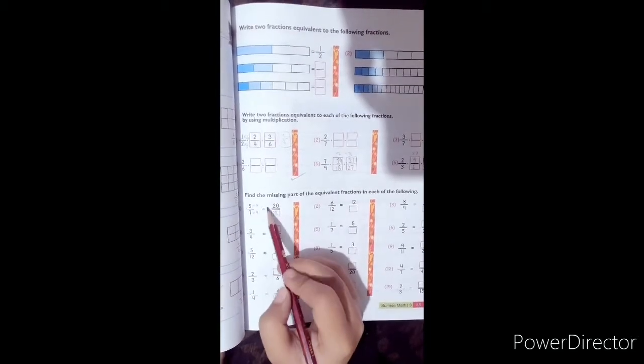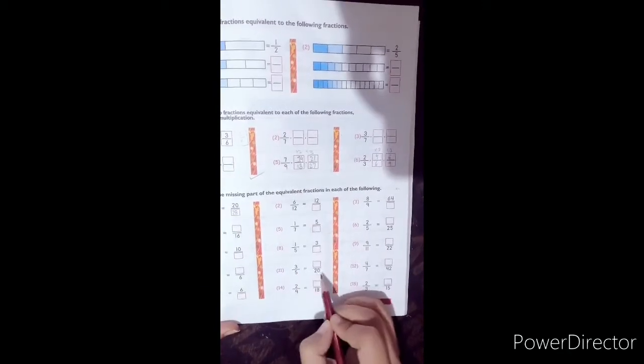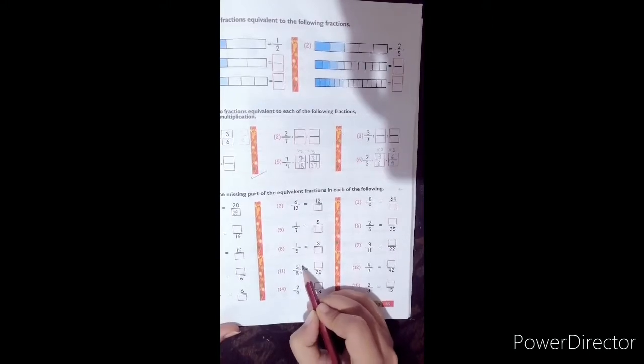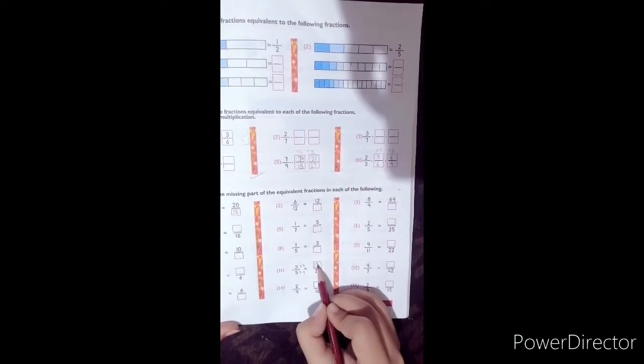We will find the missing number by observing. Here is 5 and 20. 4 times 5 is 20. Now we will multiply 3 by 4 to get 12.